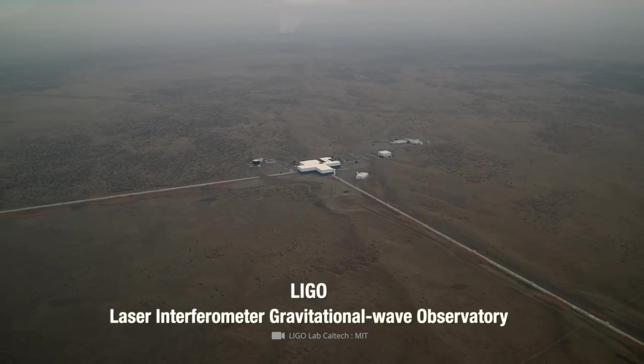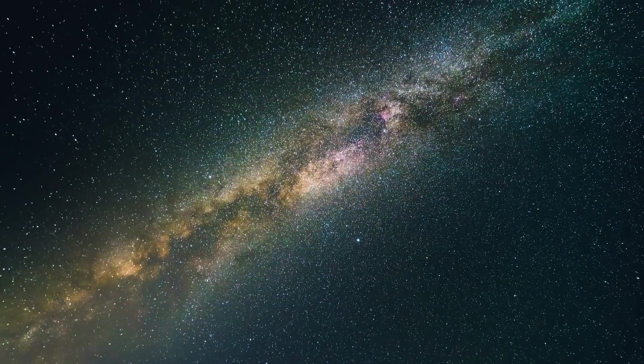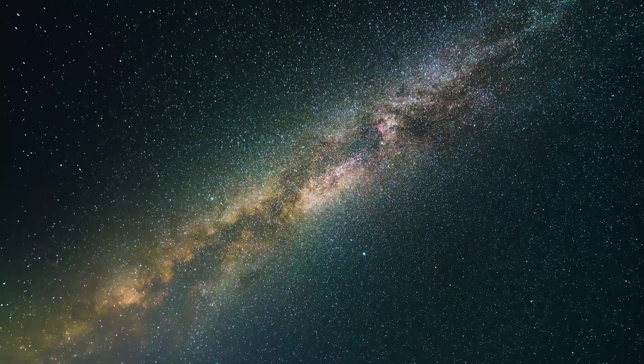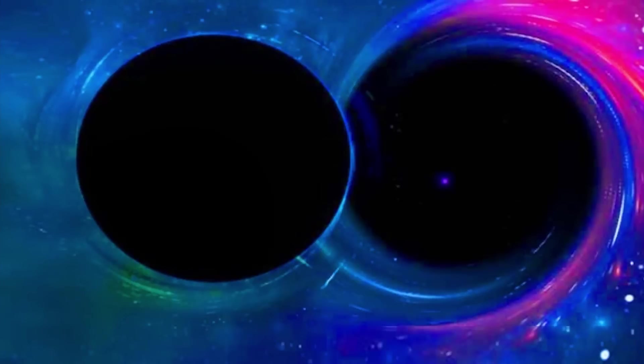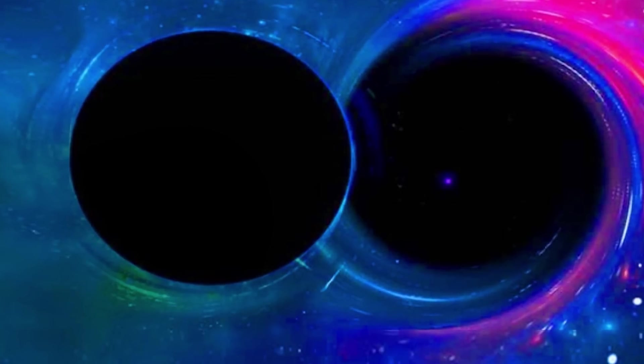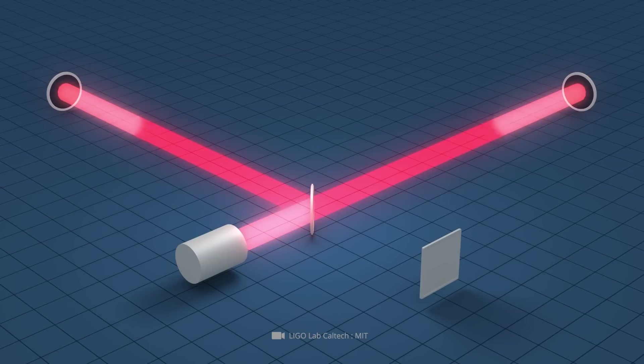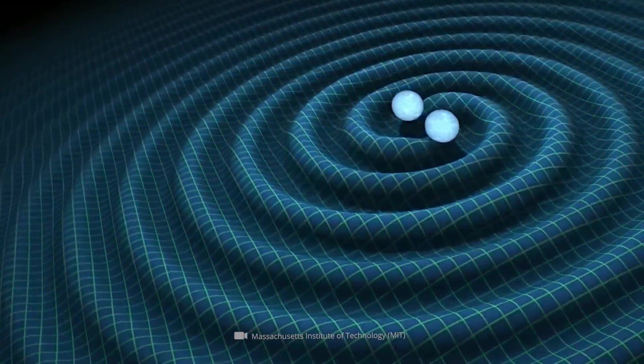LIGO stands for Laser Interferometer Gravitational Wave Observatory. These high-precision instruments were developed specifically to measure gravitational waves generated by astronomical events, such as collisions of black holes and neutron stars. The detectors use laser beams that reflect back and forth between two high-precision mirrors, which can detect slight shifts in gravitational wave frequencies.